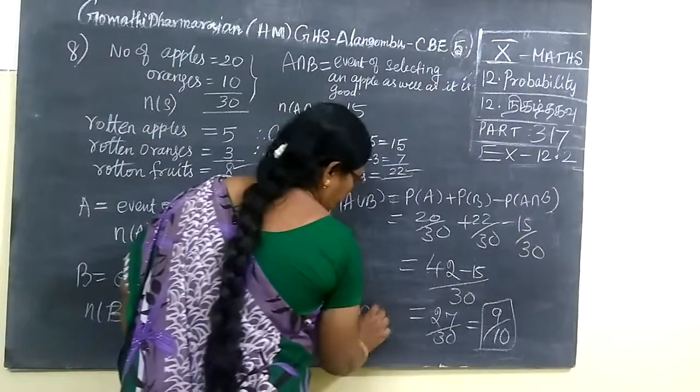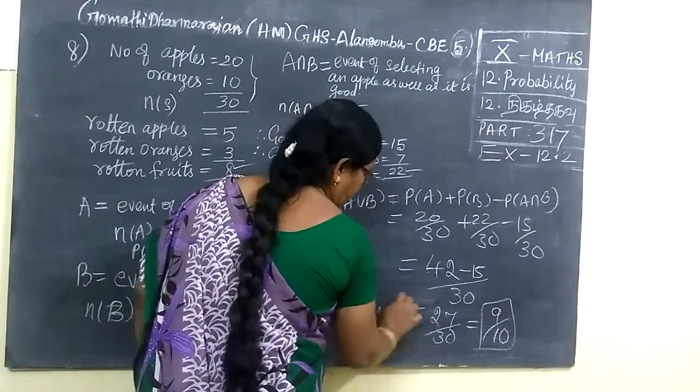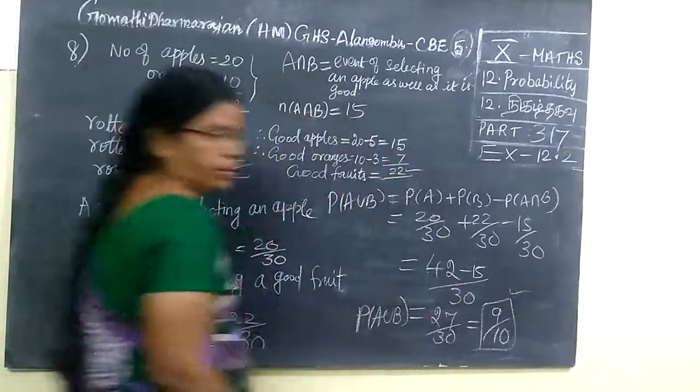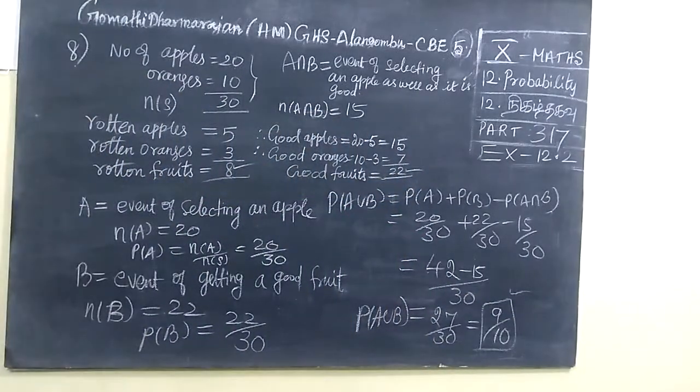The answer is 9 by 10. So this is P of A union B. So this answer is perfect. Thank you.